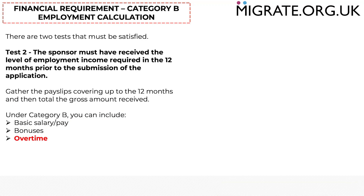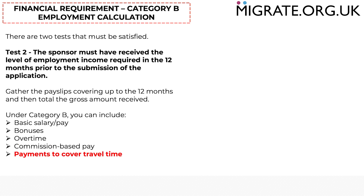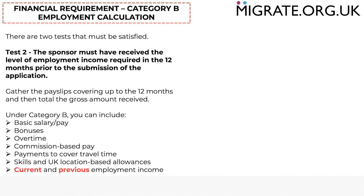Just like part 1 of the test, you can include basic salary or pay, bonuses, overtime, commission-based pay, payments to cover travel time, and skills and UK location-based allowances. And, unlike part 1 of the test where only current employment income is relevant, you can include employment income from previous employers.